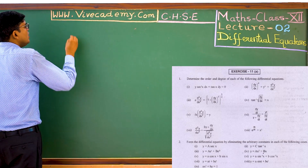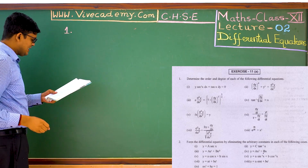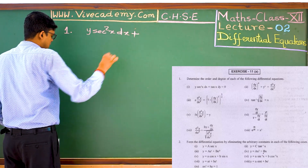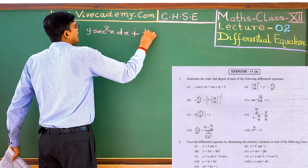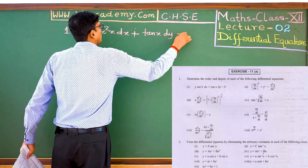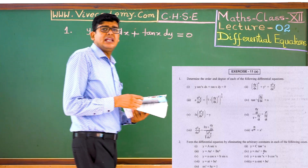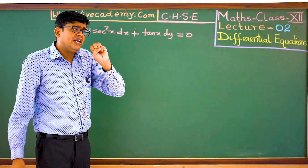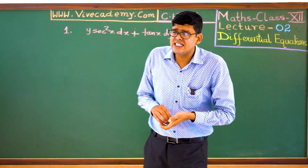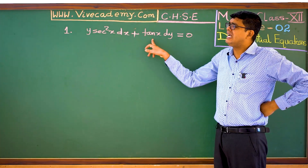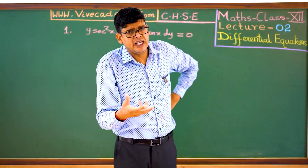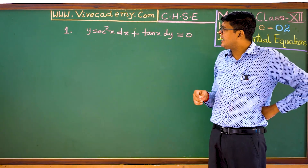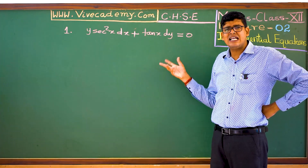Let us start. Question number 1. The differential equation is: y² x dx + tan x dy = 0.